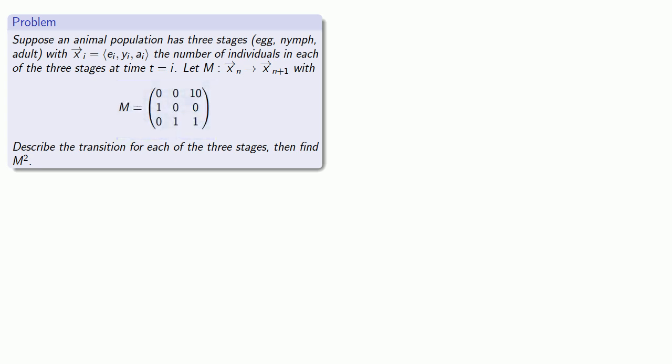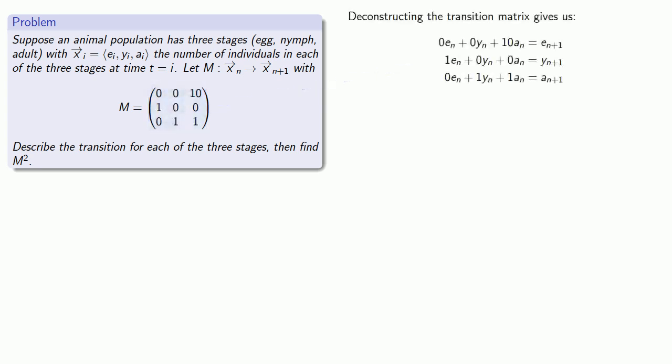Let's do two things. First, let's describe the transition for each of the three stages, and then find M squared. The entries of the transition matrix give us the coefficients of the linear formulas that describe each vector component. The number of eggs at time n+1 is 0 times the eggs at time n, plus 0 times the nymphs at time n, plus 10 times the adults at time n. We can interpret this as every adult produces 10 eggs.